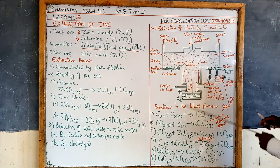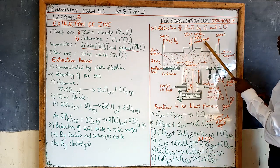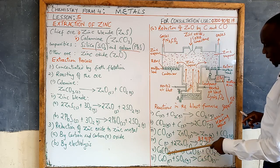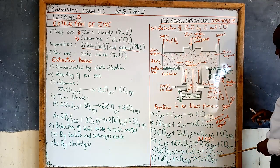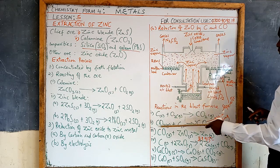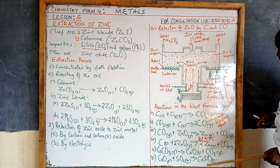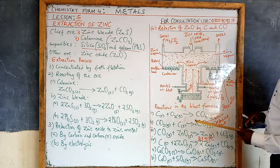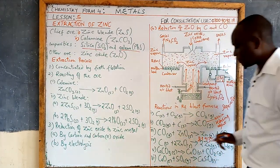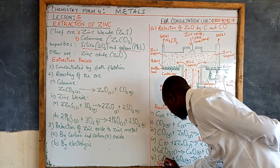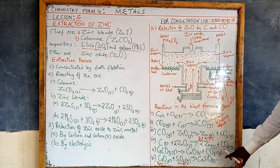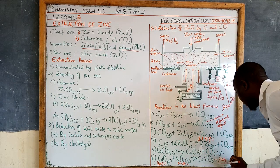Limestone added to the blast furnace serves two purposes. One: when it decomposes it forms calcium oxide and carbon dioxide, increasing the concentration of CO₂ in the blast furnace, which is then converted to CO acting as a reducing agent. Two: the calcium oxide formed removes silica impurities. Calcium oxide is basic and silicon dioxide (SiO₂) is acidic, so an acid-base reaction occurs forming calcium silicate, which is the slag.